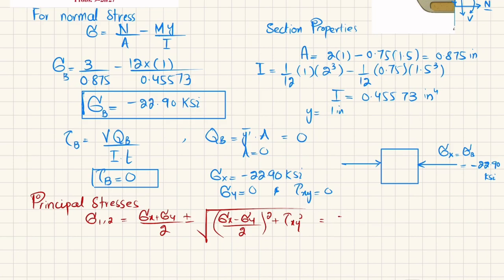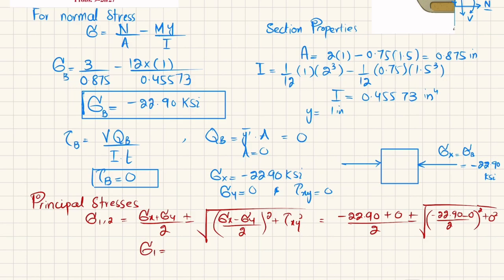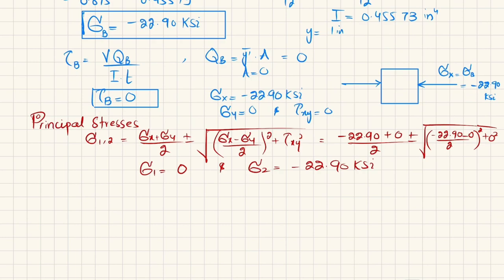Substituting values: sigma_1,2 equals (minus 22.90 plus 0) divided by 2 plus or minus the square root of (minus 22.90 divided by 2)² plus 0². Solving: sigma_1 equals minus 22.90/2 plus 22.90/2 equals 0, and sigma_2 equals minus 22.90 ksi. On the element, sigma_1 equals 0 and sigma_2 equals minus 22.90 ksi.